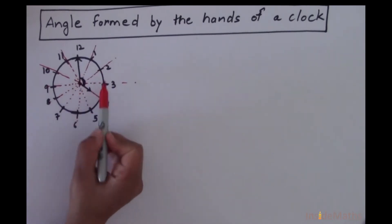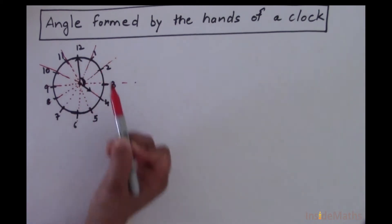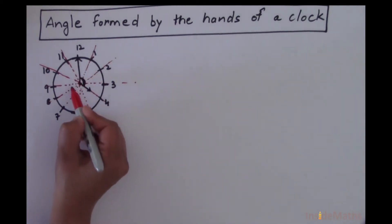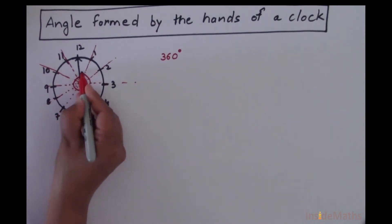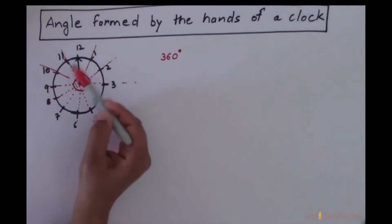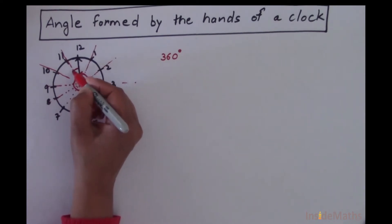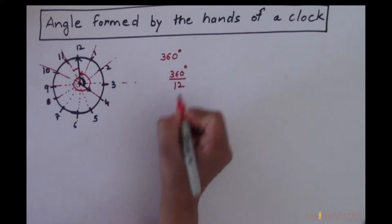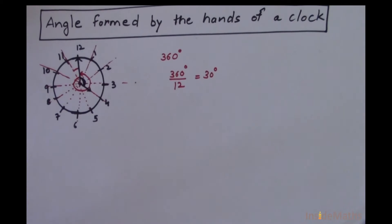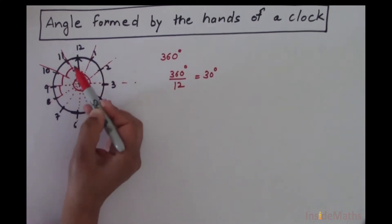This clock is divided into 12 equal intervals — 12 hours — and the whole angle is 360 degrees. Since the clock is divided into 12 equal intervals, the measure of each of these angles is 360 degrees divided by 12, which is 30 degrees. So we notice that the measure of each of these angles is 30 degrees.